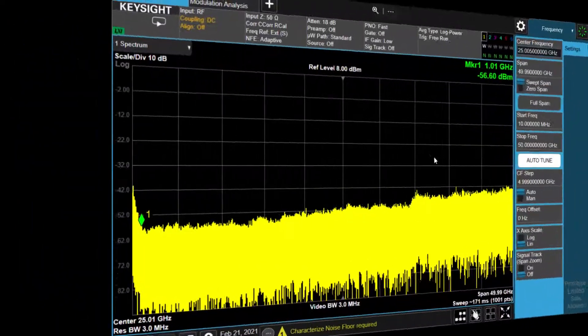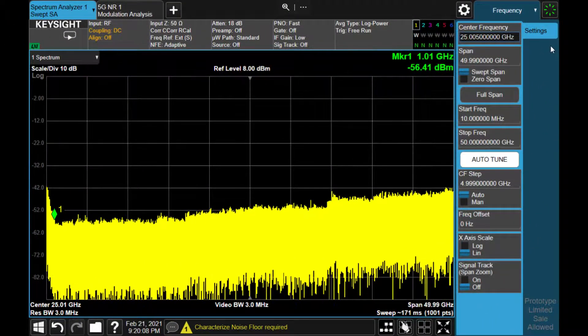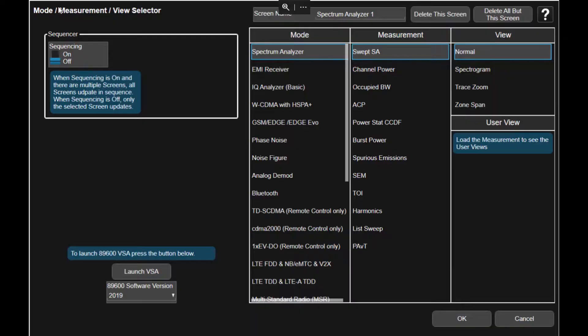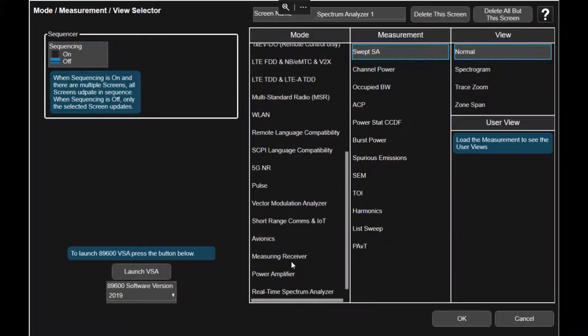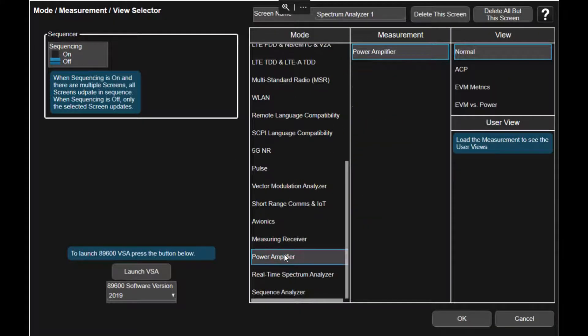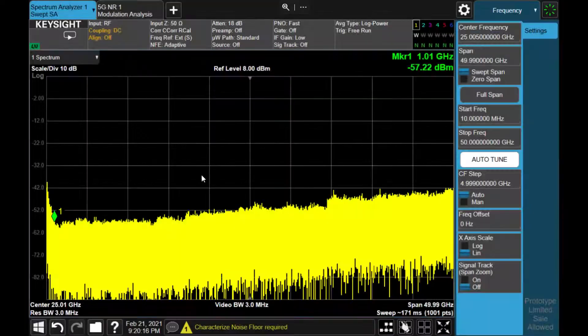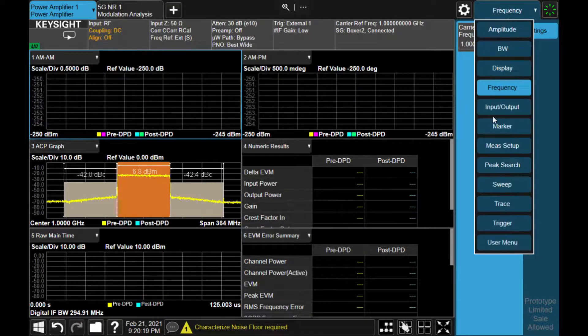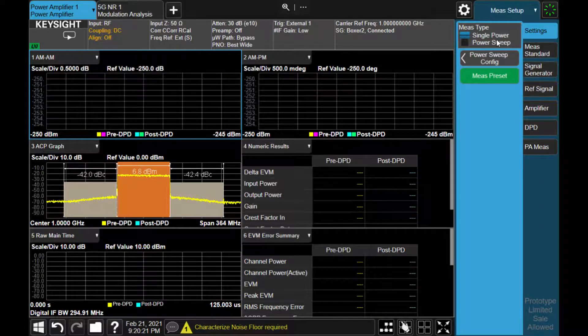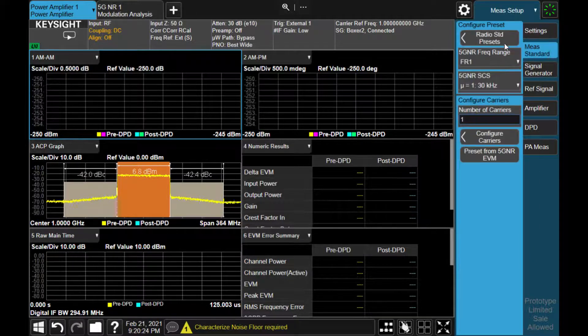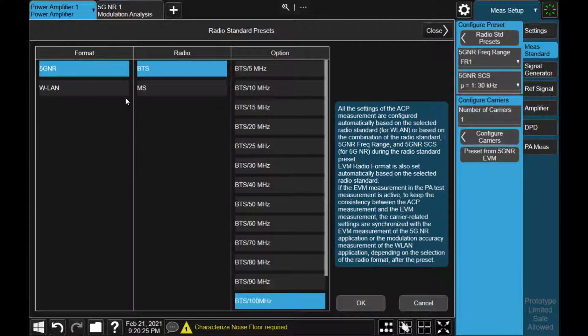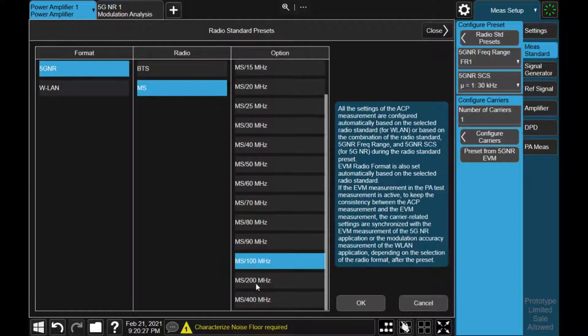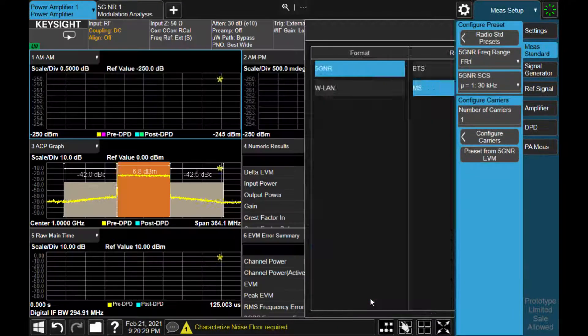Now switch to the UXA screen and then go into the PA prefire mode and select PA prefire and press OK. So now we switch to the PA prefire mode. Then first thing we have to do is set up the measurement standard we use. So we prepare the 5G NR uplink and 100MHz. So we select that, and that will automatically configure the measurement accordingly.